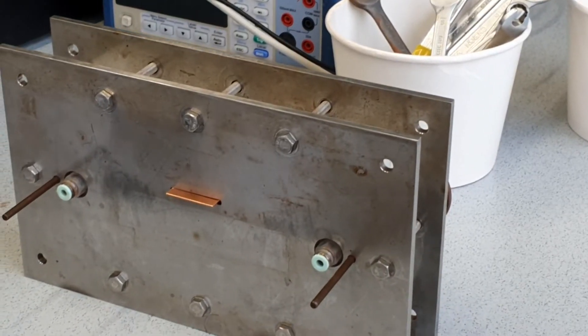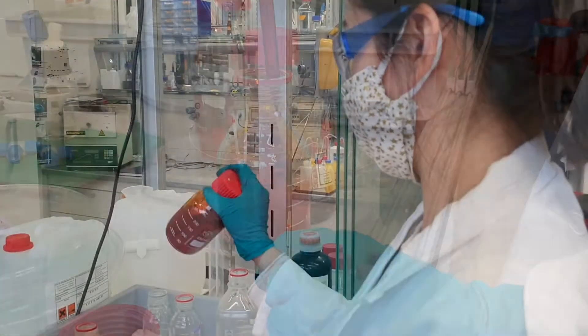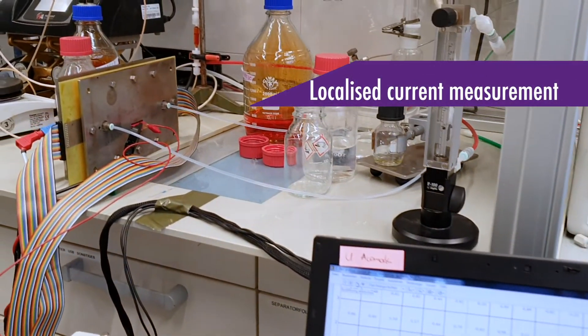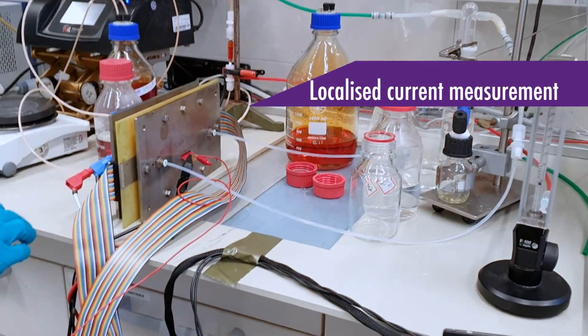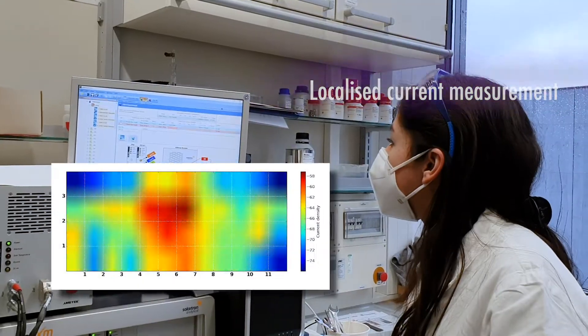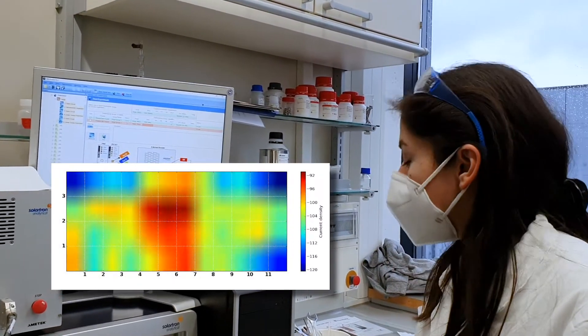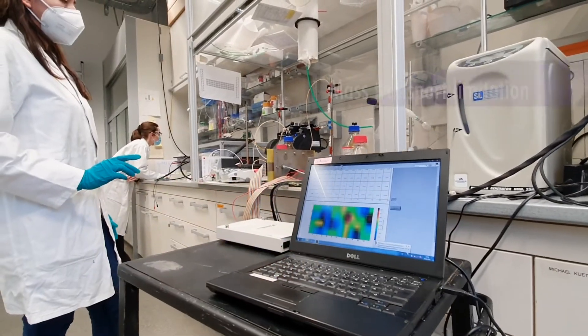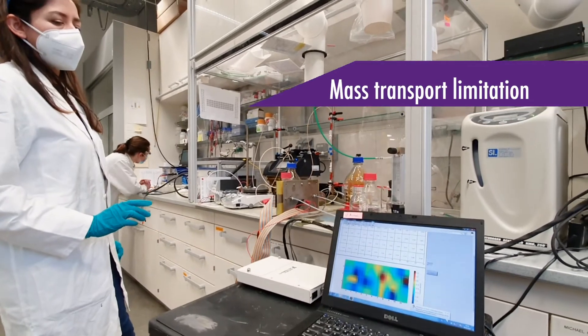Typical characterization techniques analyze the cell as a unit neglecting local changes. What we do is using a segmented electrode as a method of obtaining localized current density measurements in situ, thus accessing a higher degree of resolution. In this way, it is possible for example to probe at which stoichiometries does mass transport limitation begin to manifest.